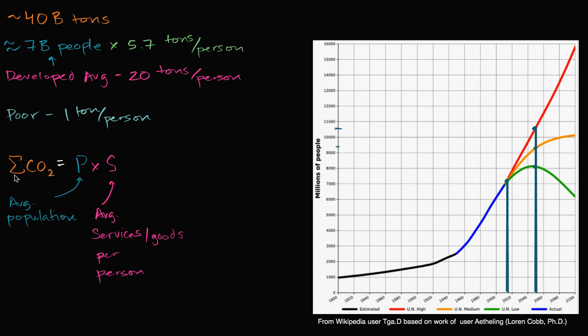So there's a lot more energy being used in the goods and services you consume than you might realize. So then you want to take, remember we want to get to the total sum of CO2. You multiply that times the average energy per service, or you could say per good or service consumed. So average energy per service.